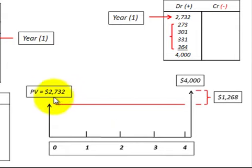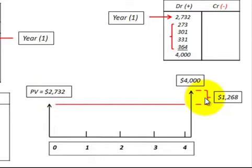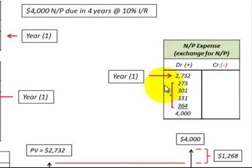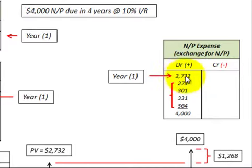In this case, we come up with a present value of $2,732. And then we recognize the expense here at its present value in year one at $2,732.